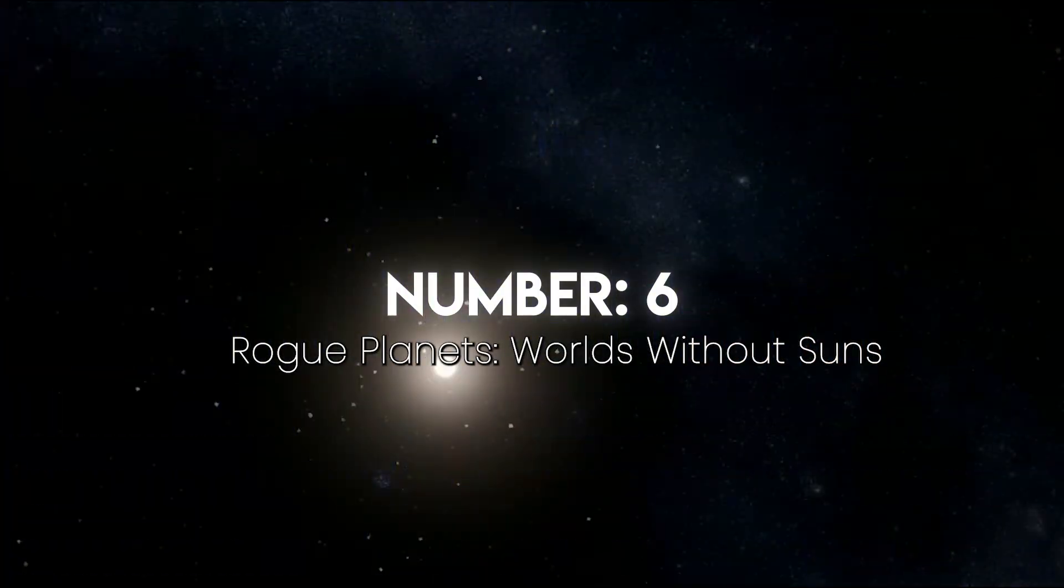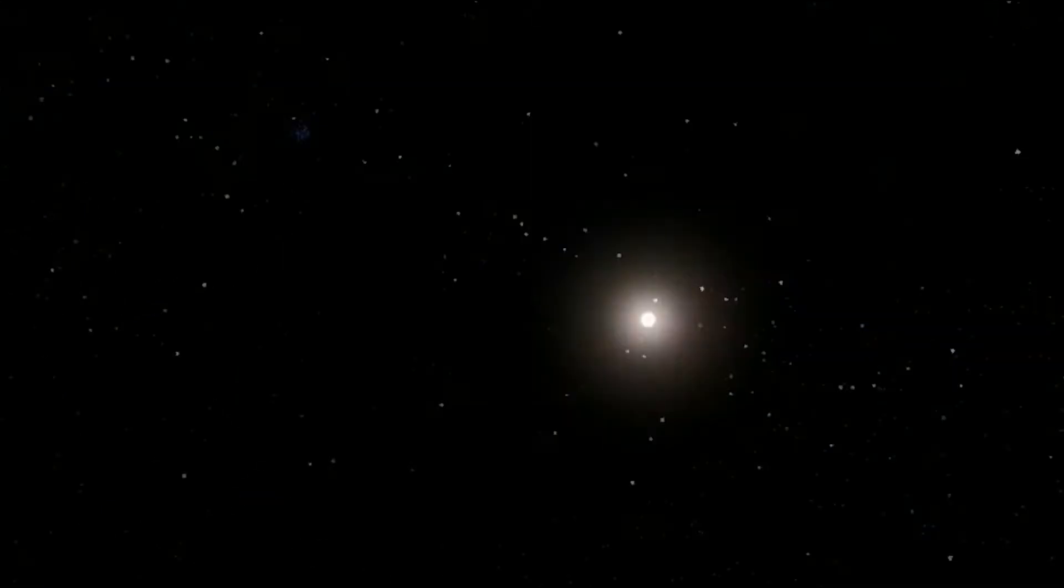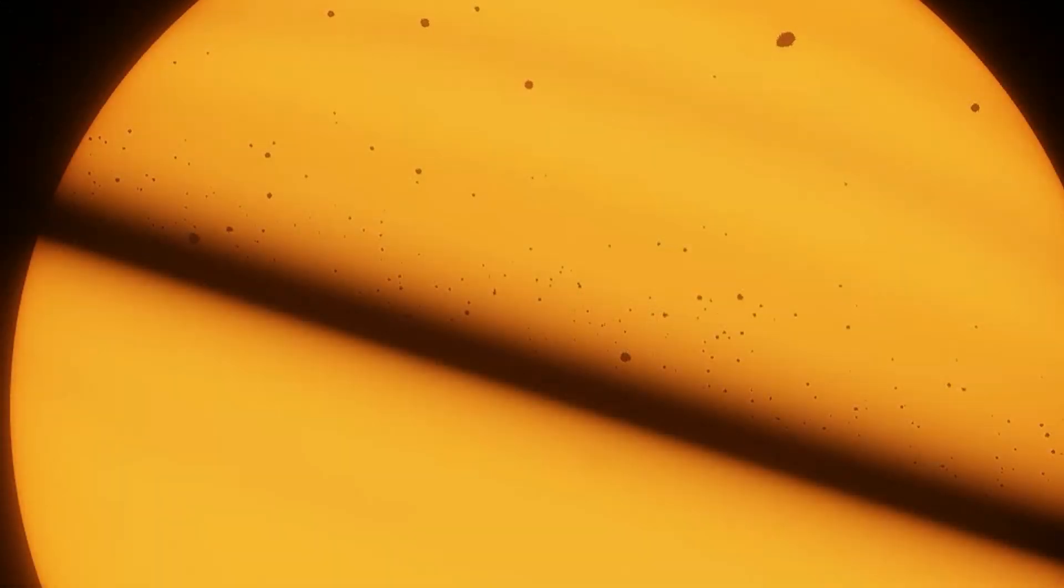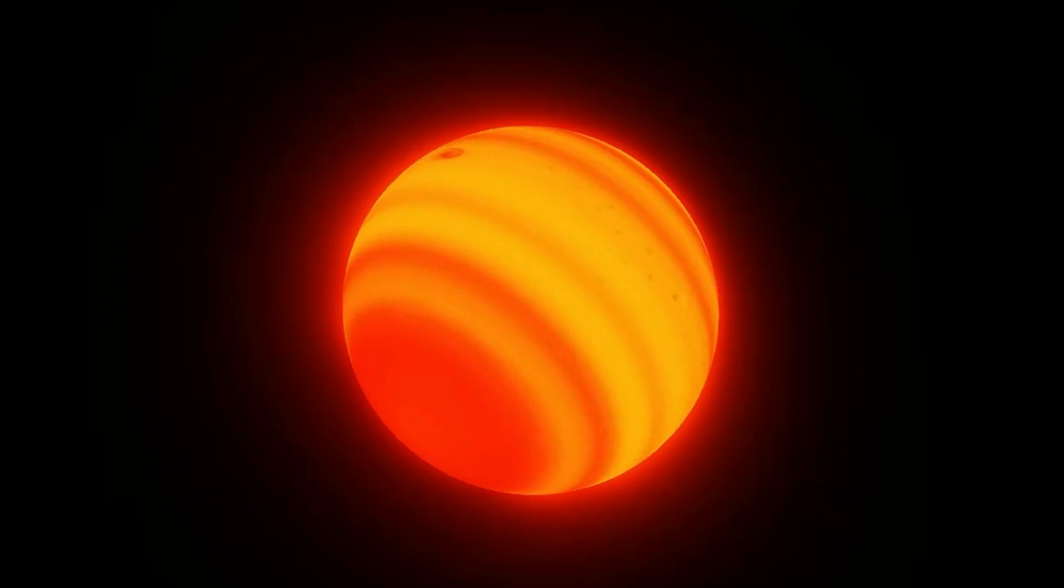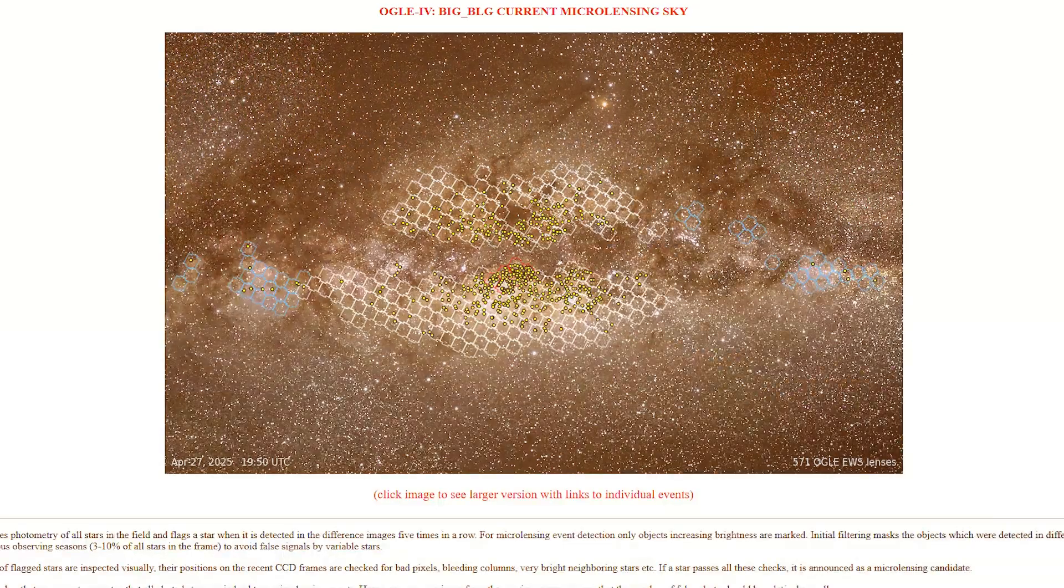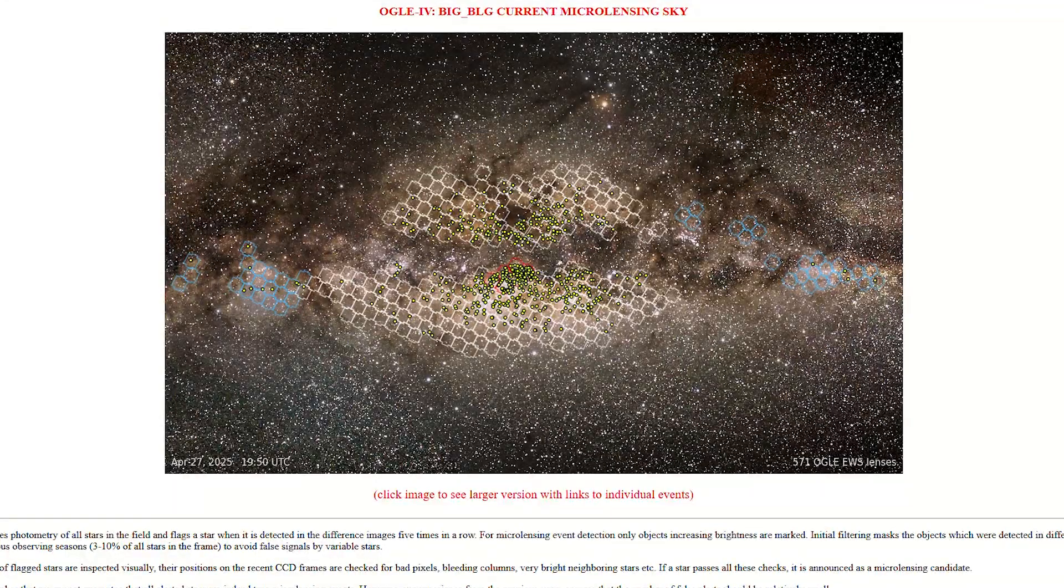Number 6: Rogue planets, worlds without suns. Imagine a world without sunrise or sunset, just eternal darkness. That's the reality for rogue planets, cosmic orphans flung away from their stars and left to drift alone. In 2020, the OGLE survey detected a free-floating Earth-mass planet, adding fuel to the idea that dark hidden Earths are lurking out there. Astronomers believe there may be billions of these wanderers in the Milky Way, possibly outnumbering stars.